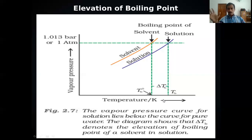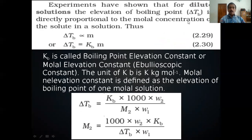Elevation of boiling point is a colligative property — it depends only on the number of particles. Experiments show that elevation of boiling point is directly proportional to the molality of the solution. Molality is the number of moles per kilogram of solvent. So ΔT_b = K_b × m, where K_b is the proportionality constant known as the molal elevation constant, ebullioscopic constant, or boiling point elevation constant.